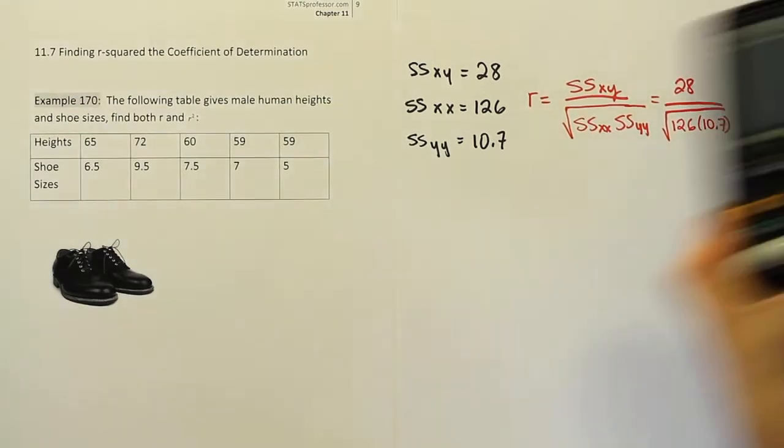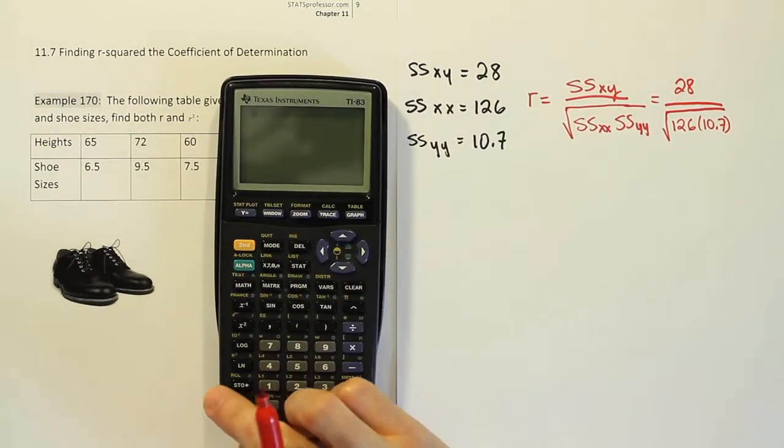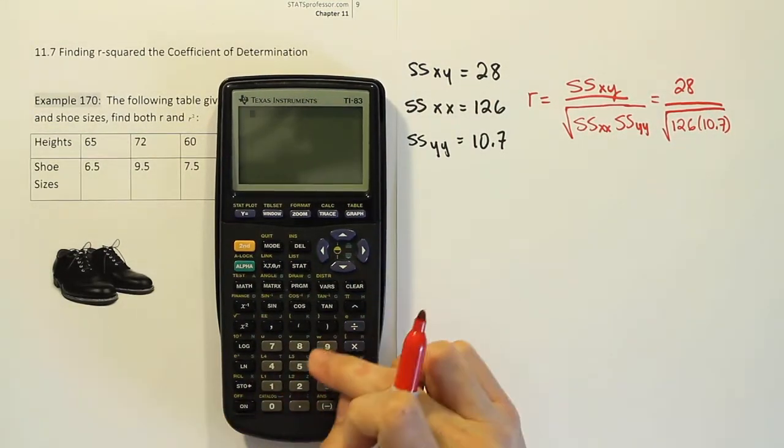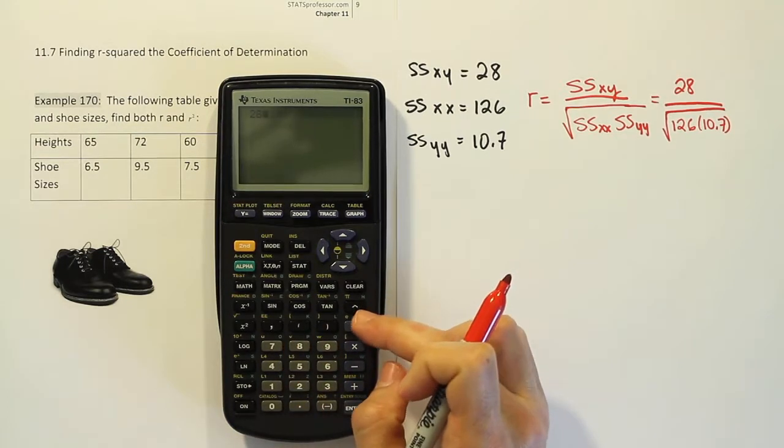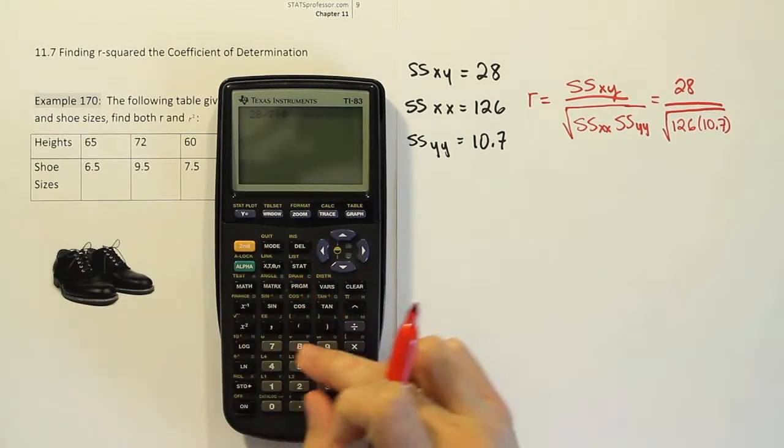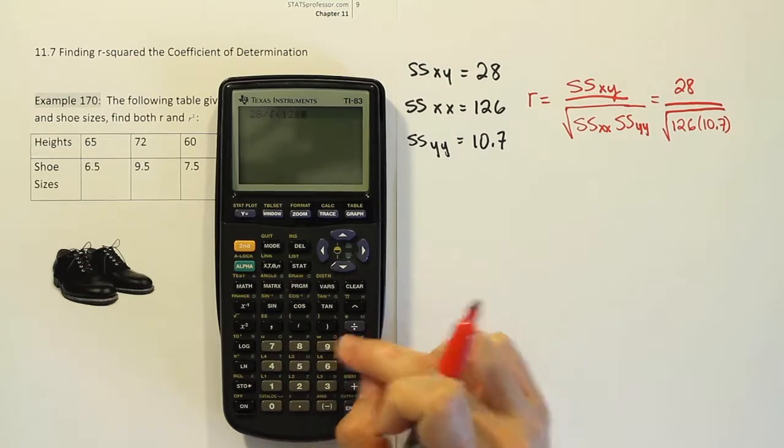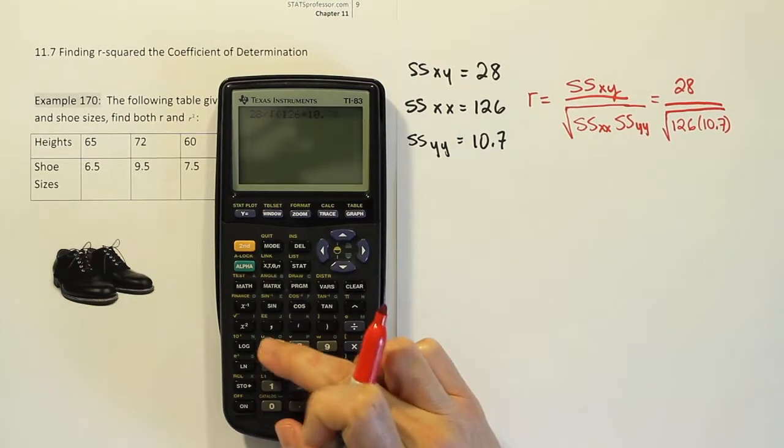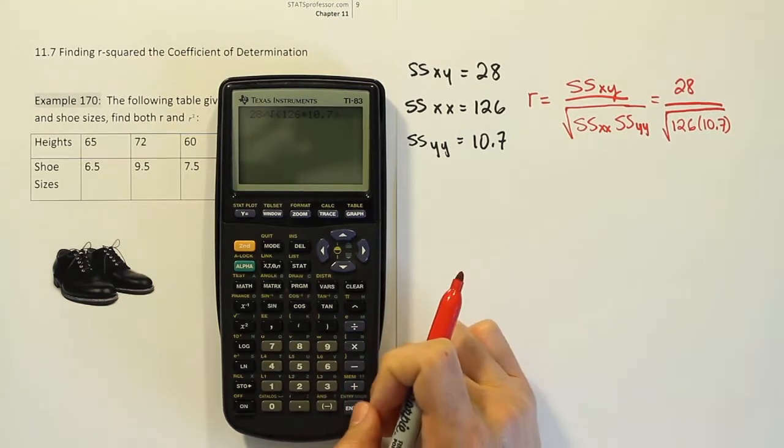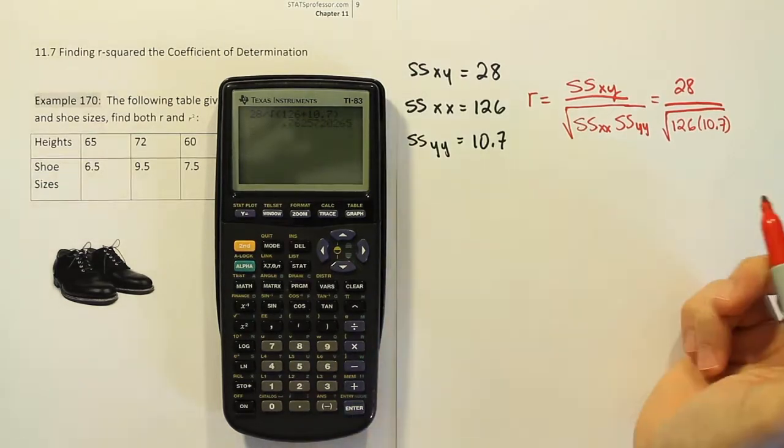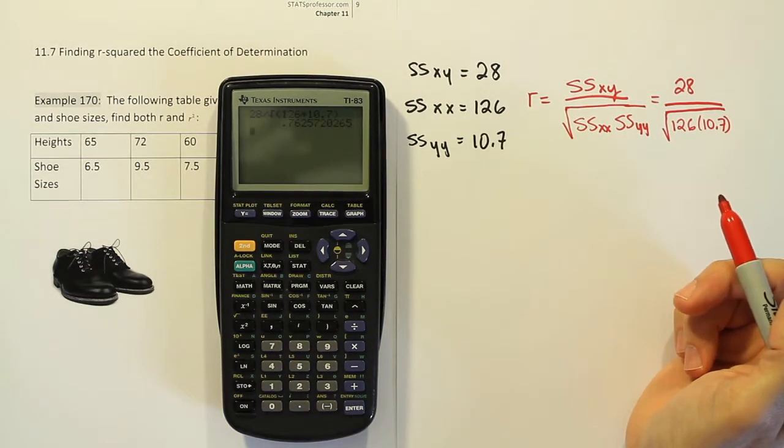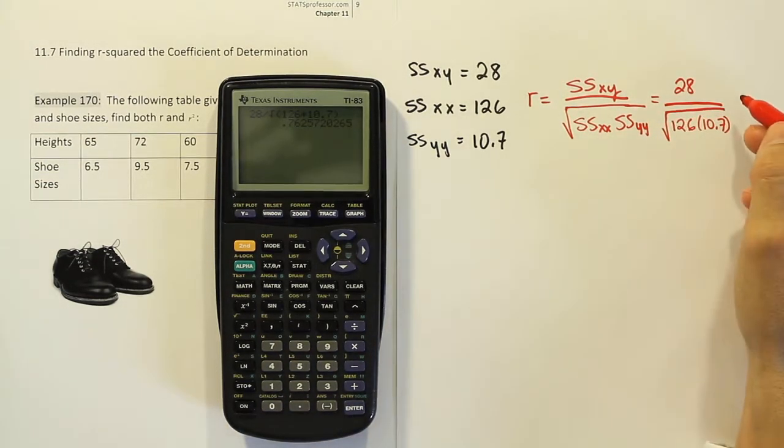From there, what you're going to do is simply divide these two numbers. So 28 divided by the square root of 126 times 10.7. Close up your parenthesis in the bottom. When we do the division, we end up with 0.763. So with that being our r value, we could jump right to r squared now if we wanted to.